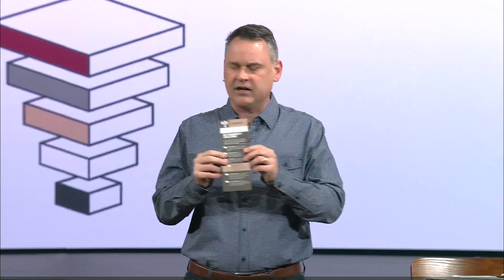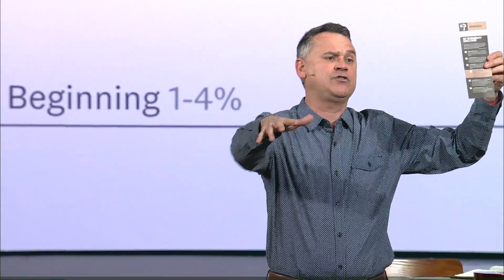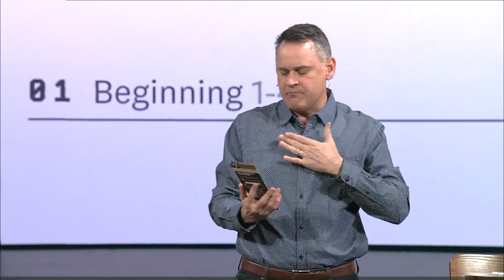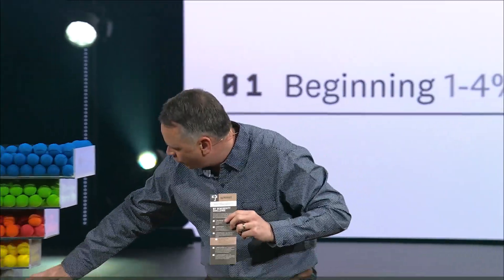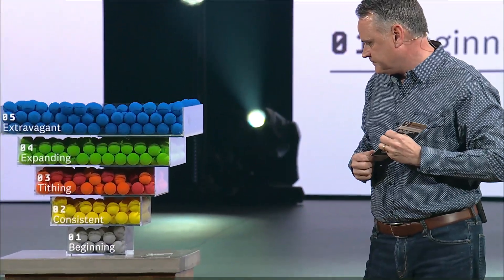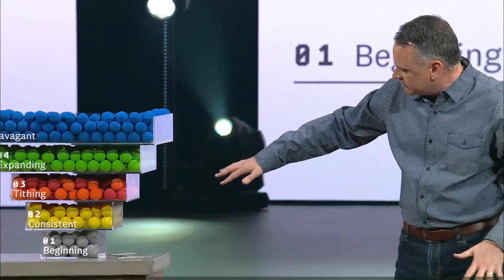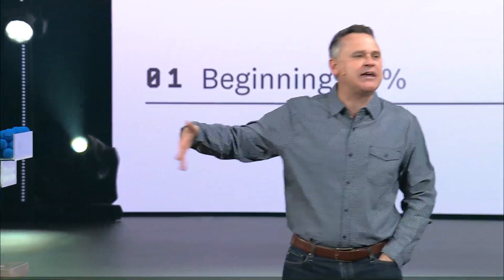I'm mailing you something this week — probably arriving Tuesday or Wednesday. You'll get a letter from me and a card like this. There's probably one in front of you in the seat back right now. It's an opportunity for all of us to make this personal — for me, for you, for all of us to love generosity. There are five levels on the card. You're somewhere on it, or you need to be. You've got to talk to God about where you need to be.